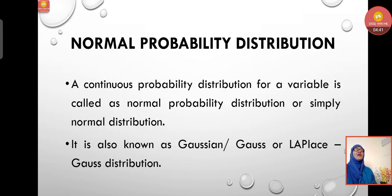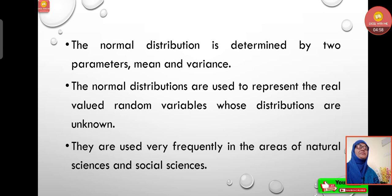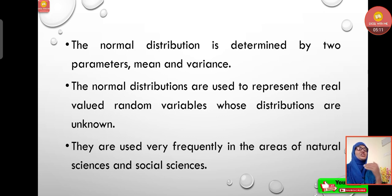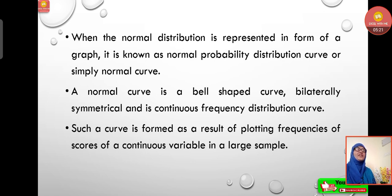A continuous probability distribution for a variable is called a normal probability distribution, or simply normal distribution. It is also known as Gaussian, Gauss, or Laplace-Gauss distribution. The normal distribution is determined by two parameters: mean and variance. Normal distributions are used to represent real-valued random variables whose distributions are unknown, and they are used very frequently in natural sciences and social sciences.